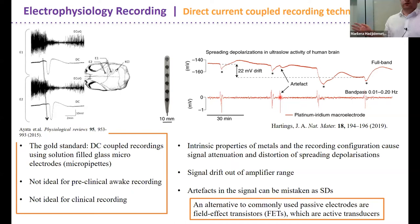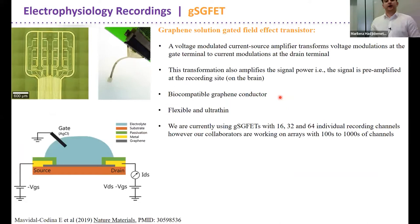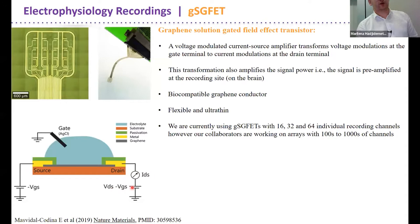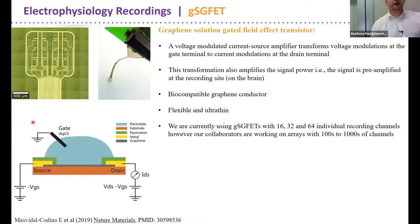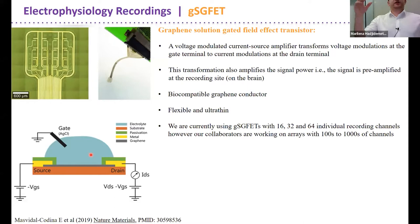An alternative to these passive electrodes are field effect transistors — active transducers. We're using graphene solution-gated field effect transistors, which work on the same principle as a standard FET. We set an electrical potential at the gate, which feeds into the source, and we have a drain voltage. We record current flowing through the device. The voltage coming from the brain — recorded in vivo from the electrolyte — modulates this current. We initially record current and then post-analysis convert it to voltage.